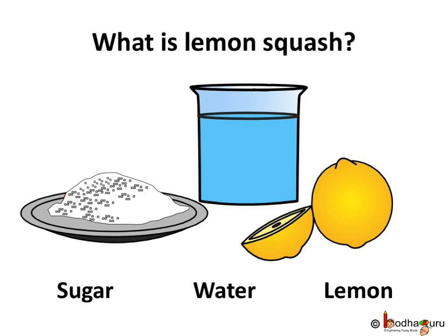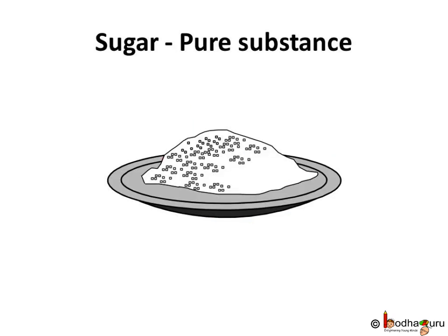The lemon squash consists of three different substances — that is lemon juice, water, and sugar. What does 1 kg of sugar contain? Actually, just one component — that is sugar particles only.